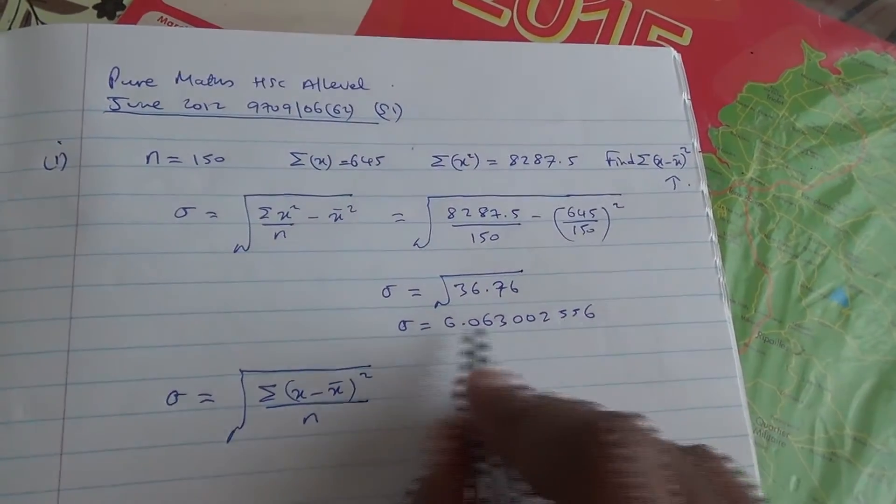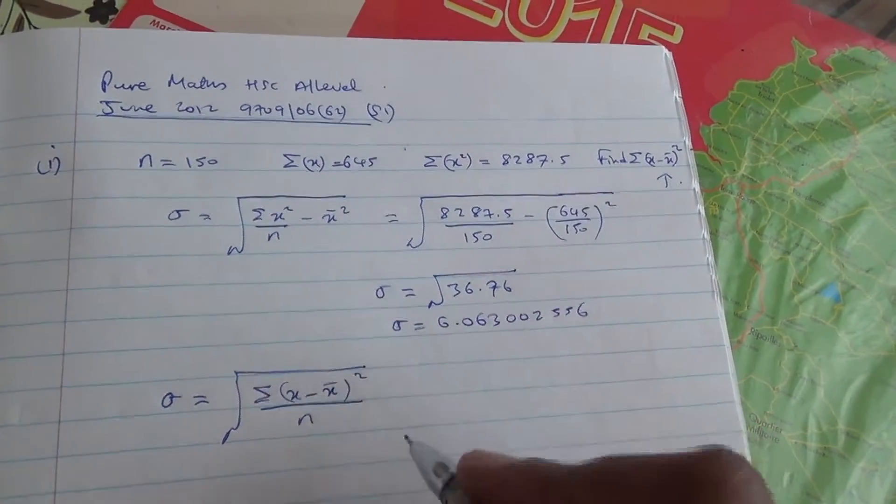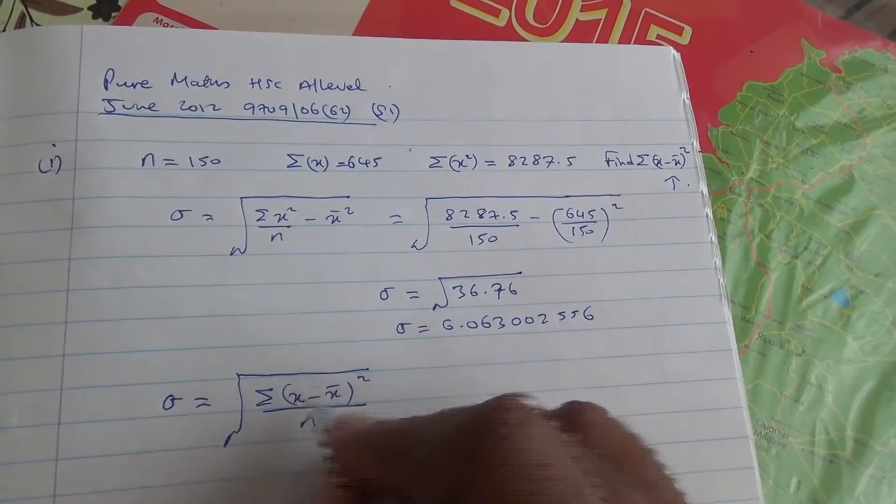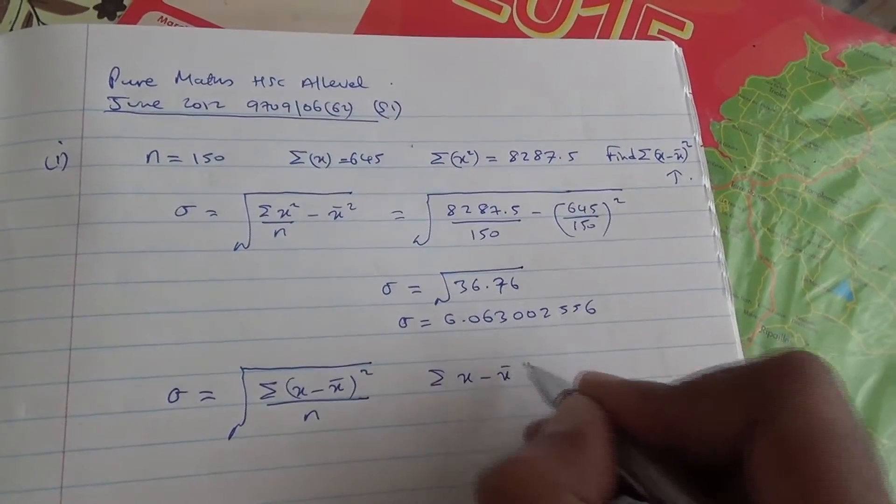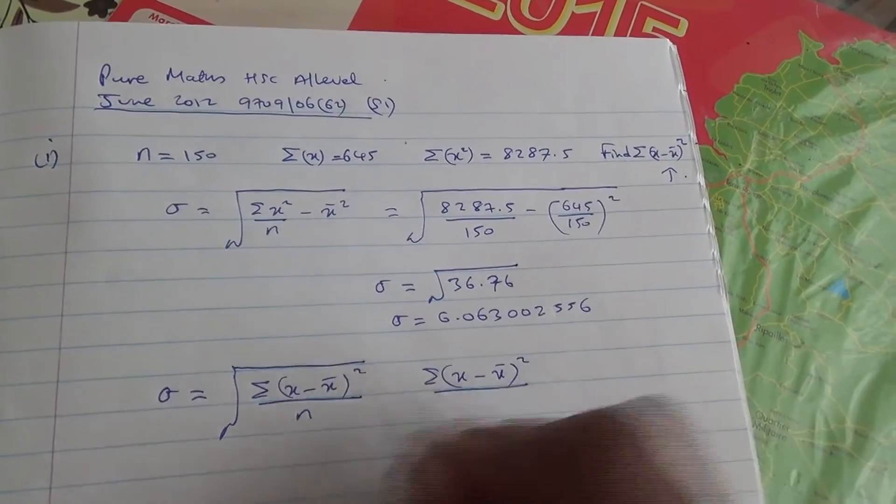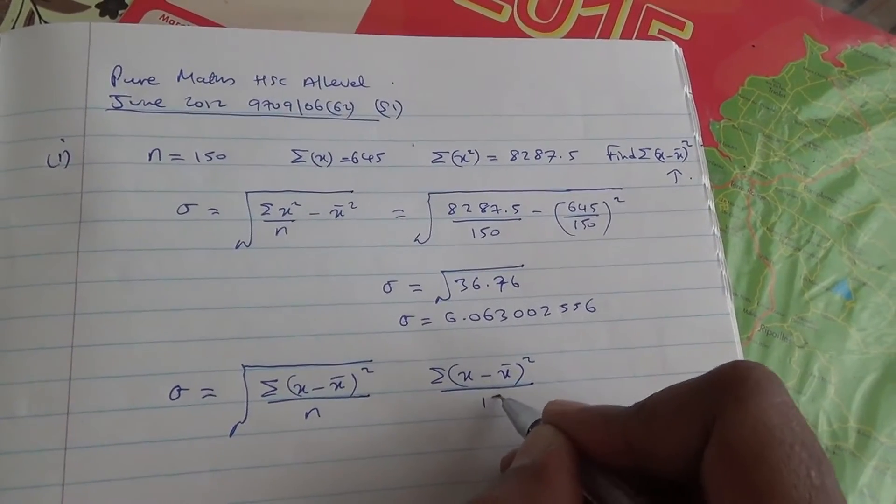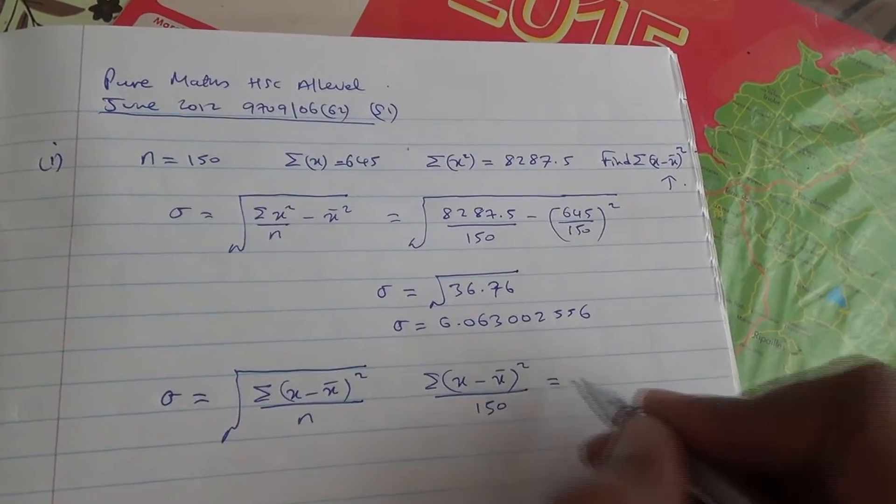The standard deviation, as found, was this. So we're going to say, then, the summation of x minus the mean of x, all of that to the square, divided by the sample size, 150, is equal to,